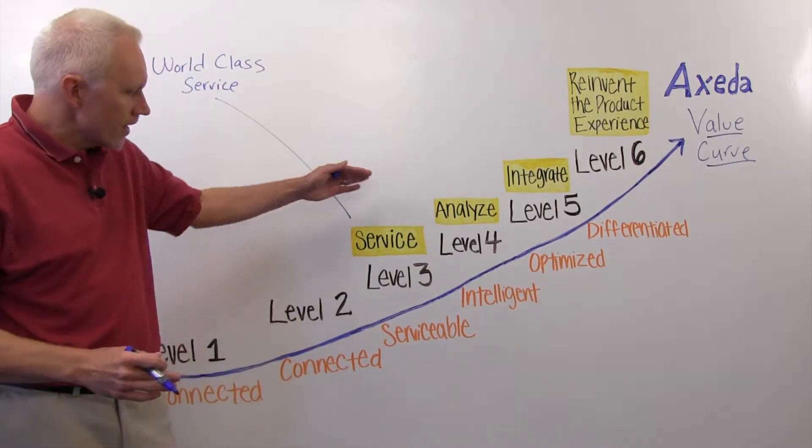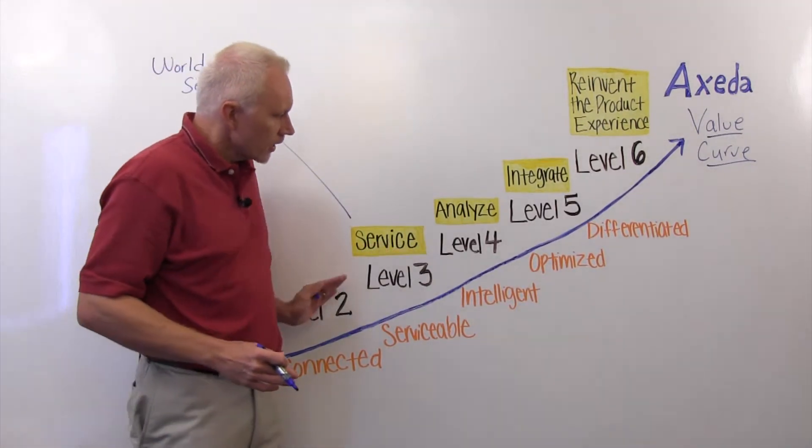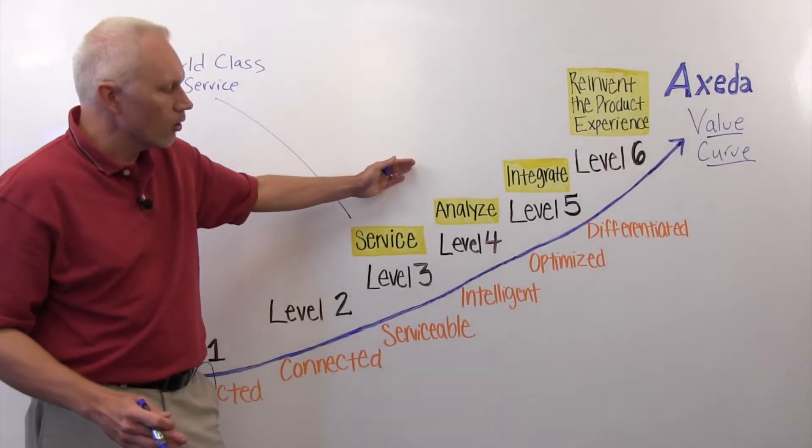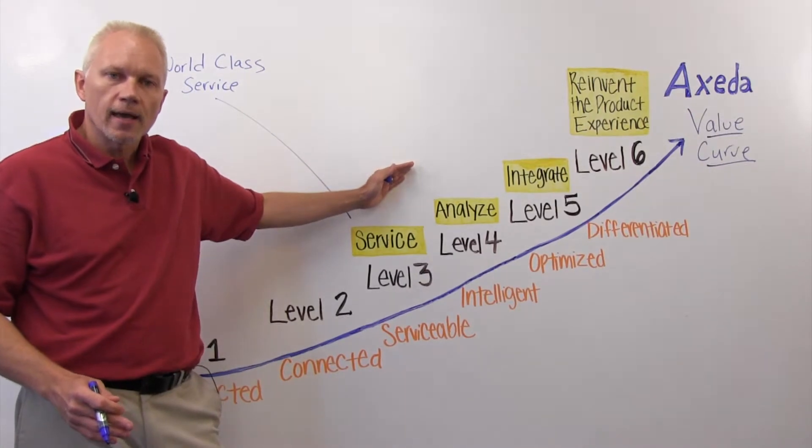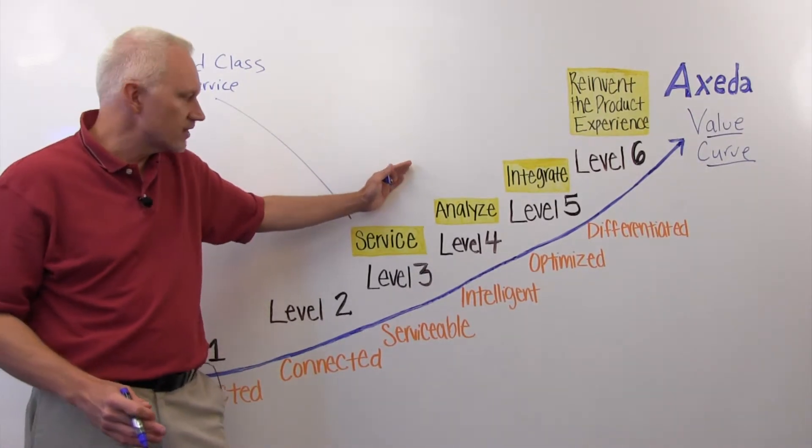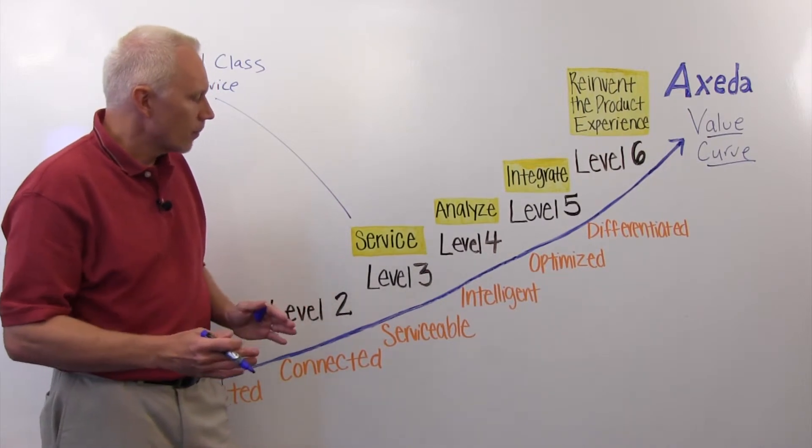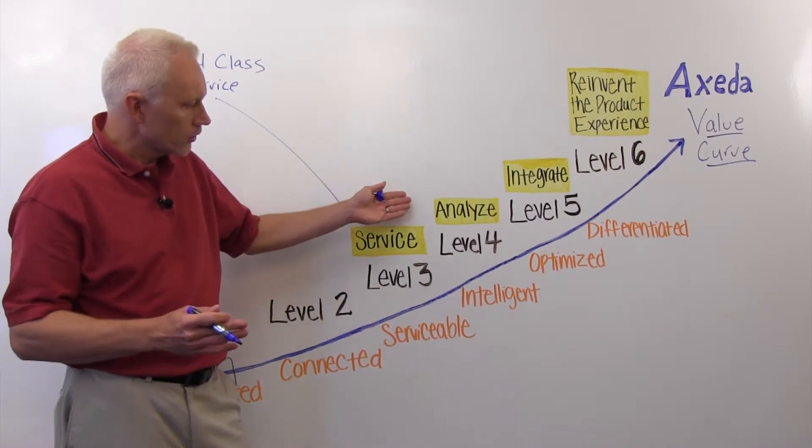The next thing you do typically, and it's almost the maturity curve we see, although some people jump right to level six and five, but typically they go into analyzing the data. And there, they're looking for some kind of business insights. How can we improve the product design by understanding the usage?